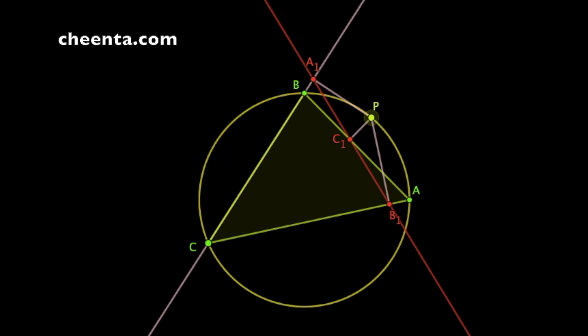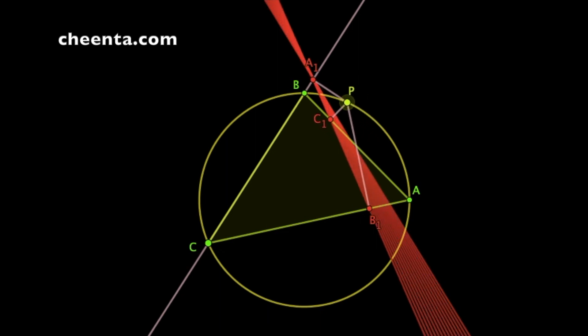Next we will do an experiment with this Simpson line. We will move the point P along the circumference of this circle.